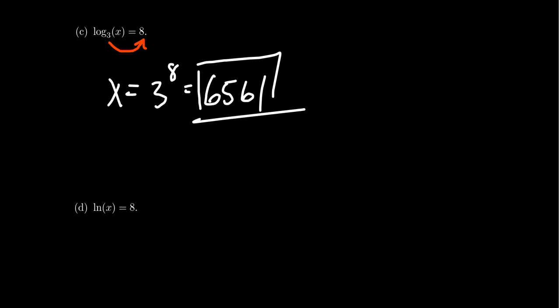And then for the next one, if you have the natural log of x is equal to 8, how do you solve this one? Remember, the natural log is just log base e. And so when you move the natural log to the side, you're going to switch to the exponential base e. So you get x is equal to e to the 8th, for which you can consult your calculator and see